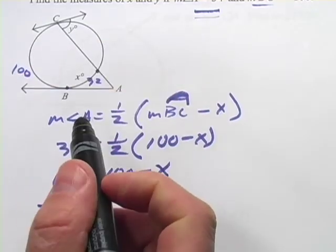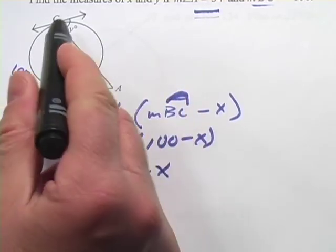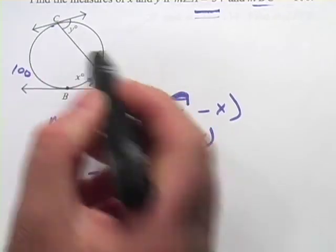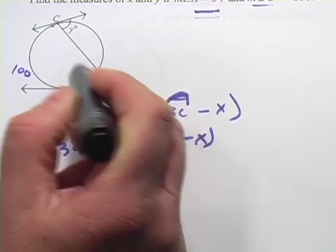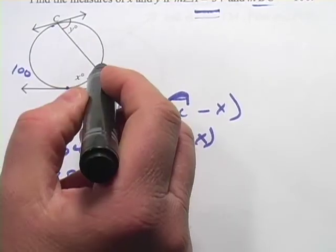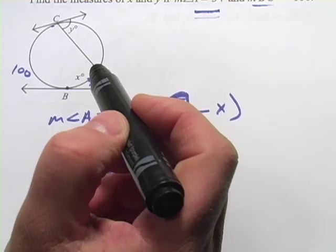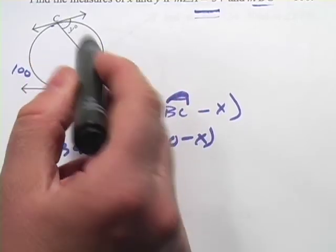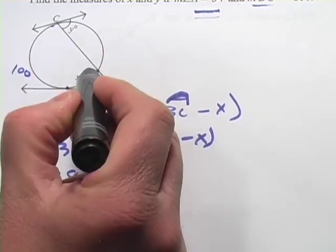You might remember from a previous piece of work that when you have a tangent line to a circle, and a secant line, the angle that they form, it's going to be the same relationship with its arc as an inscribed angle. So this Y is going to be one half of this arc length.